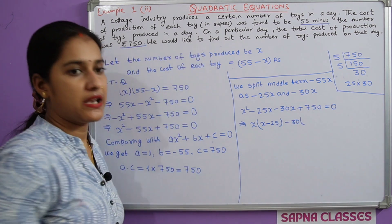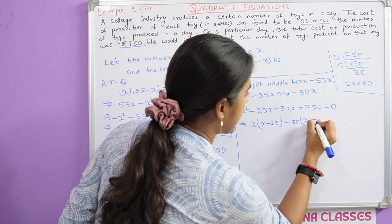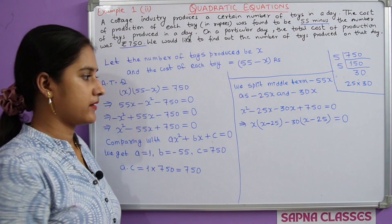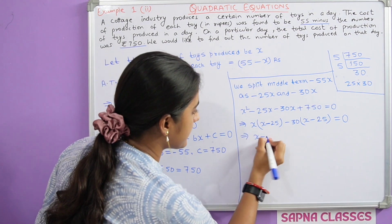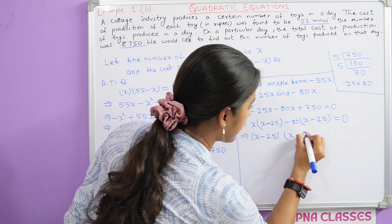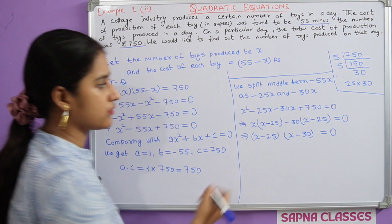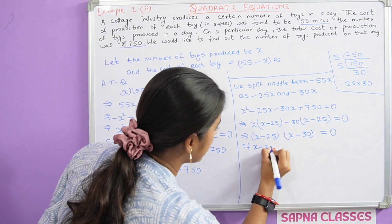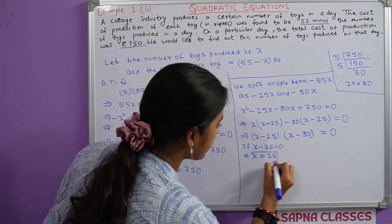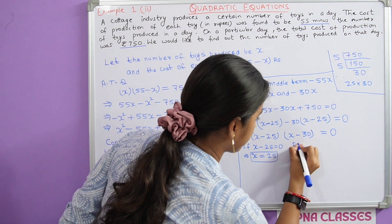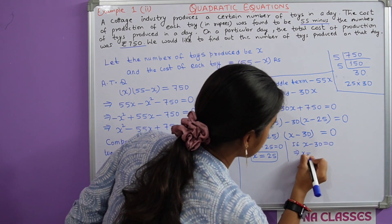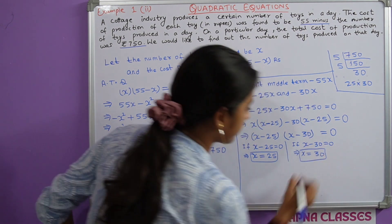This implies taking x common, we get x minus 25, and taking minus 30 common, we get x minus 25 equal to zero. So x minus 25 equal to zero or x minus 30 equal to zero. If x minus 25 equal to zero, this implies x equal to 25.